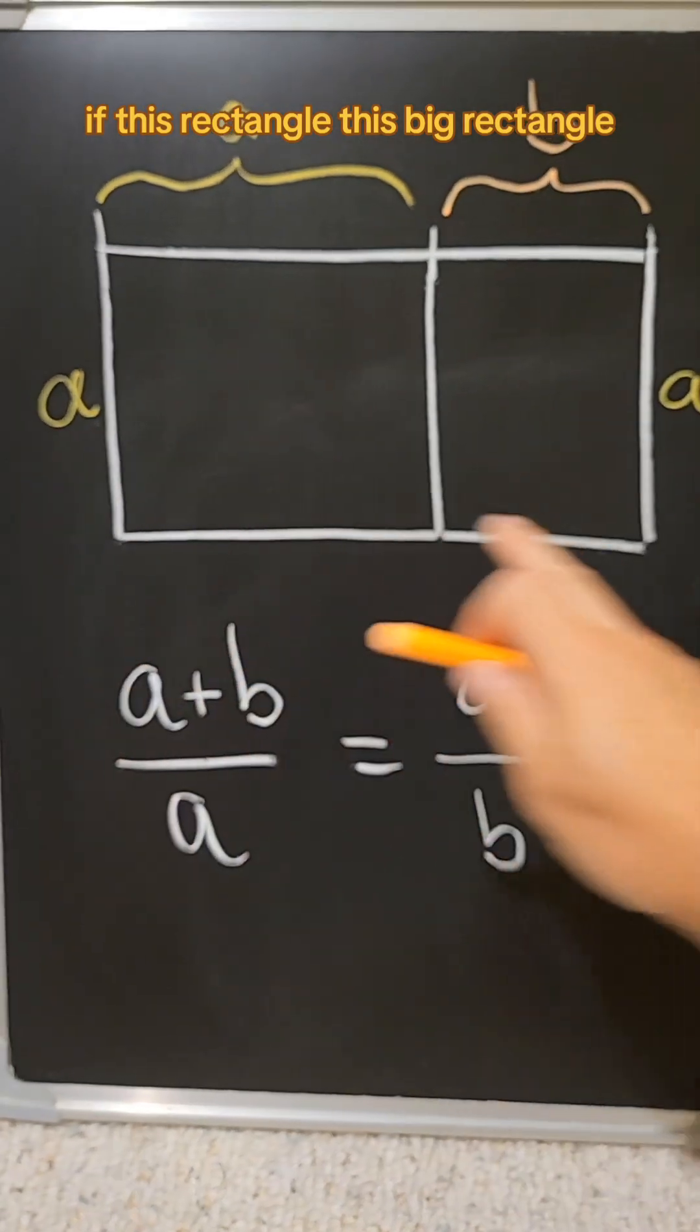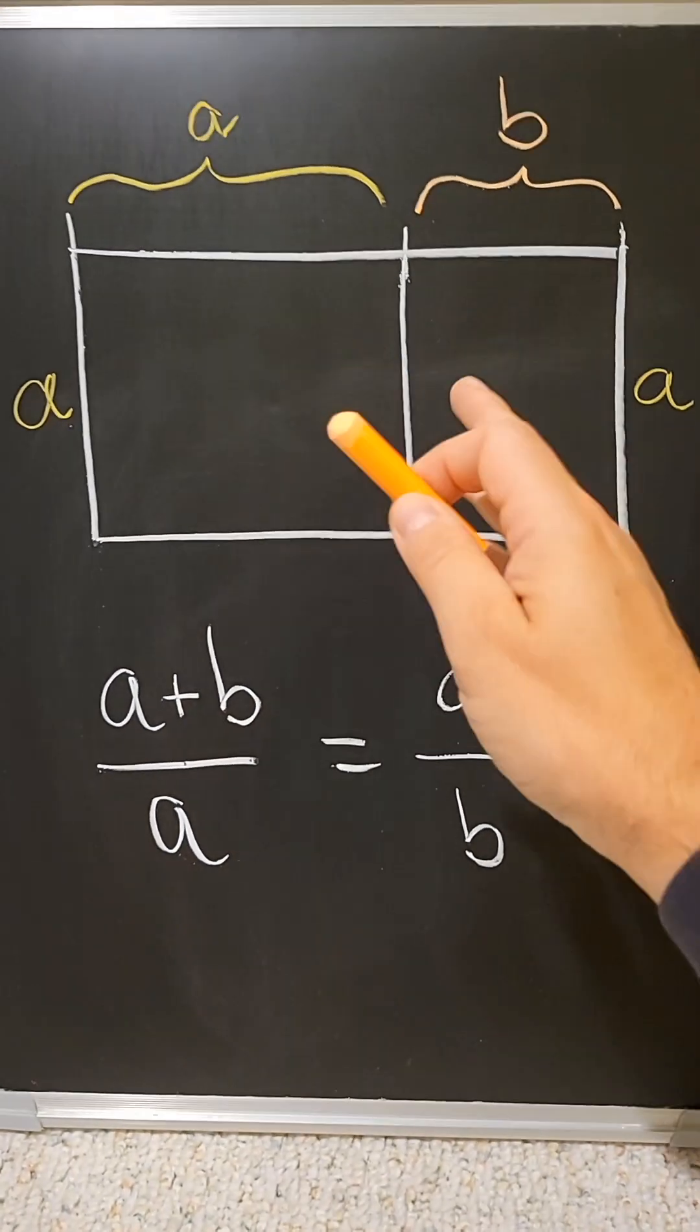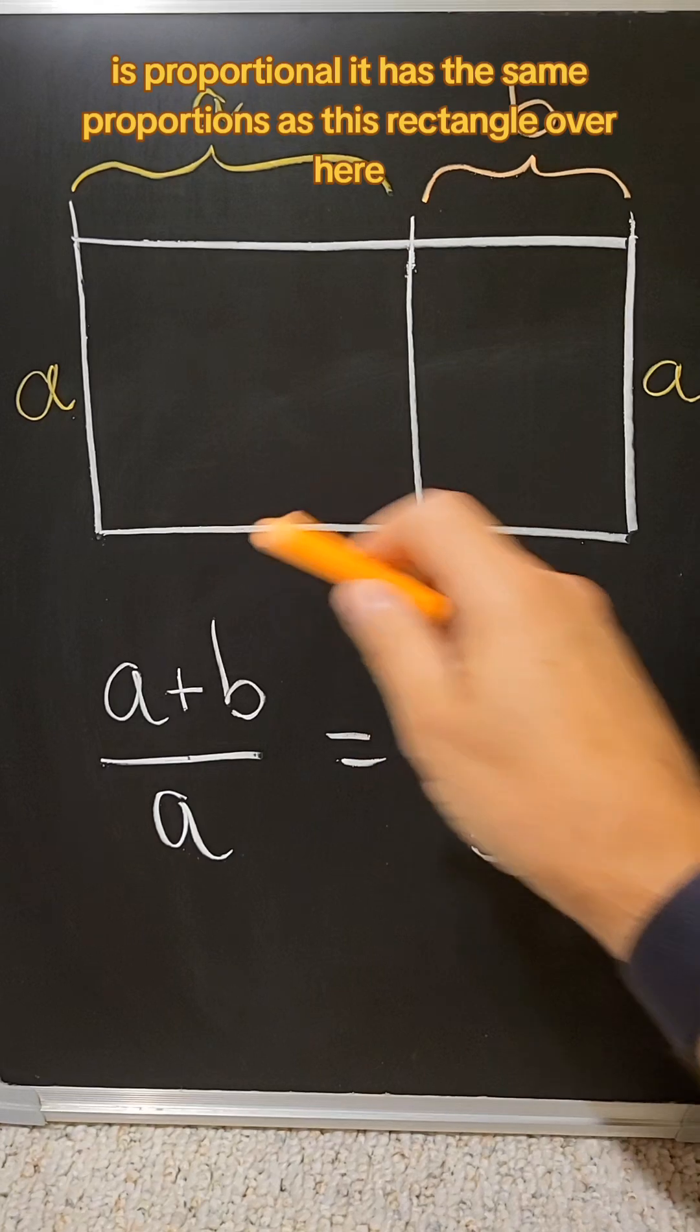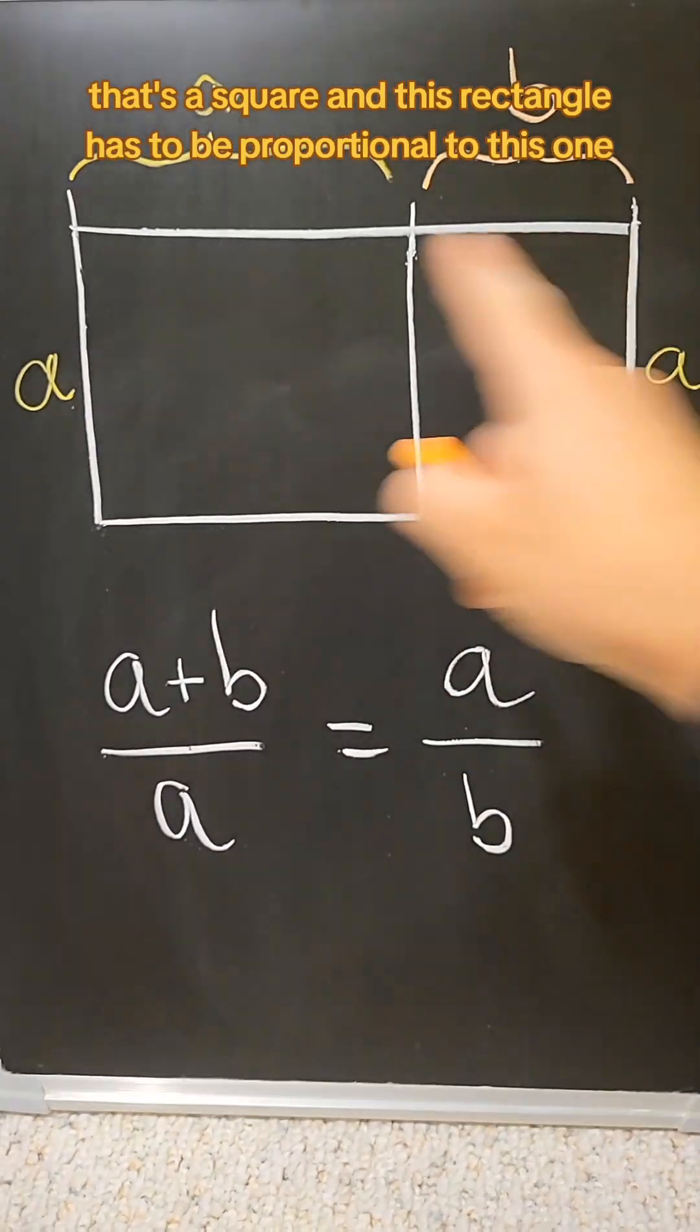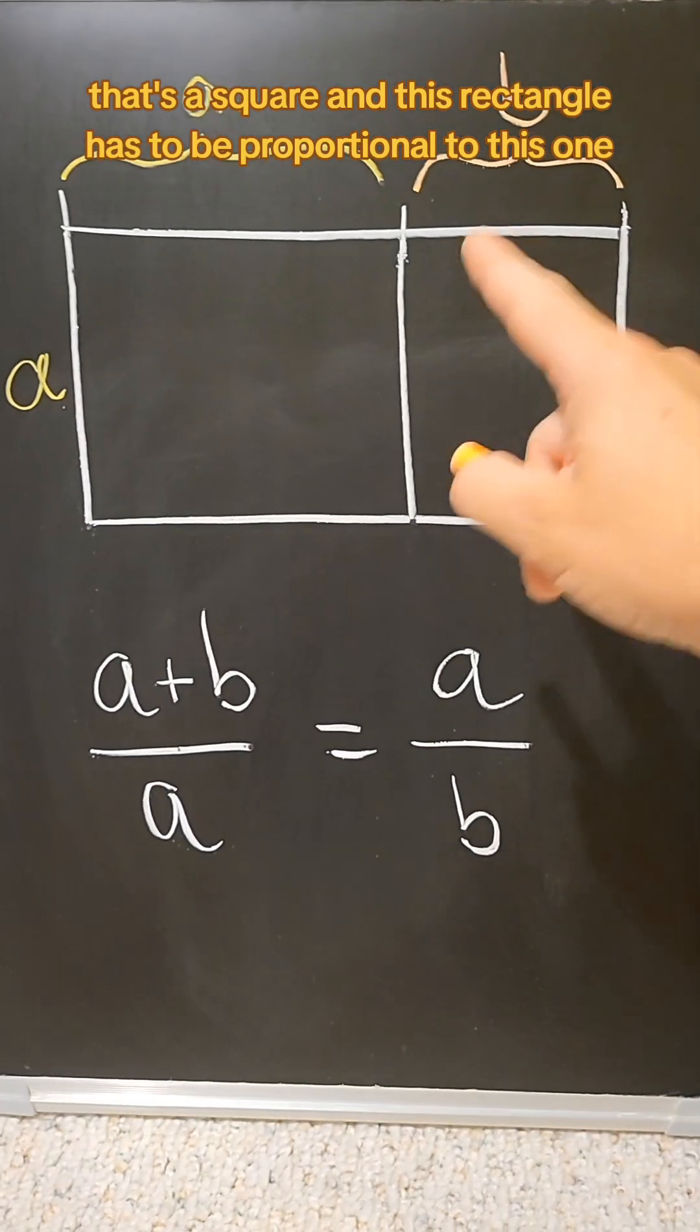If this rectangle, this big rectangle, is proportional, it has the same proportions as this rectangle over here. That's a square, and this rectangle has to be proportional to this one.